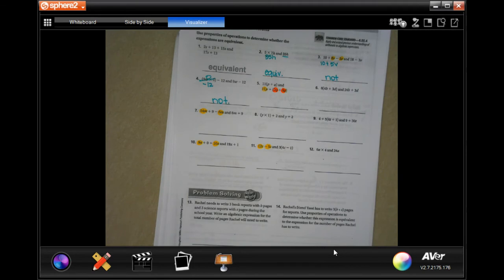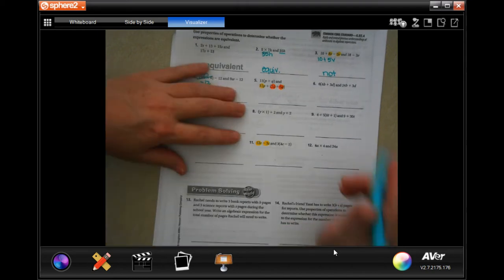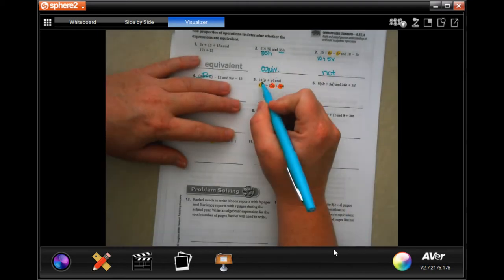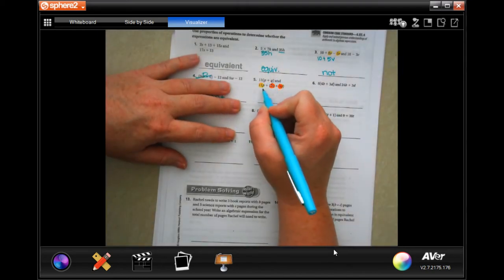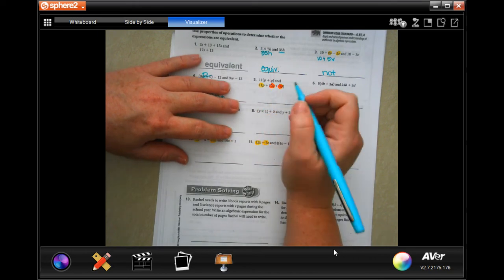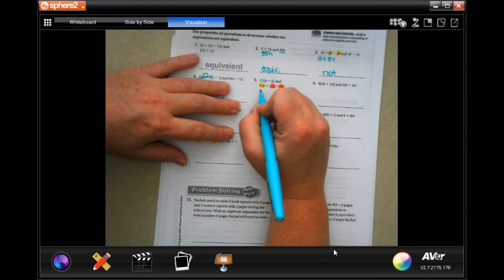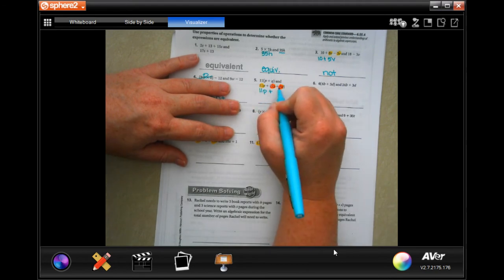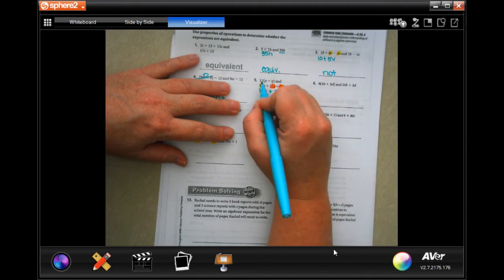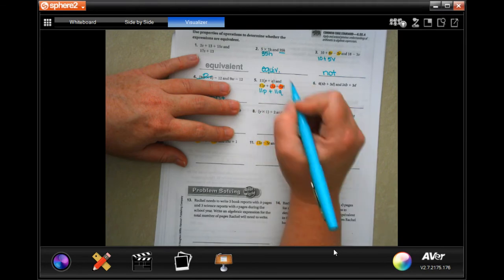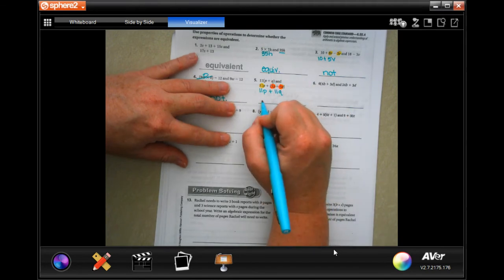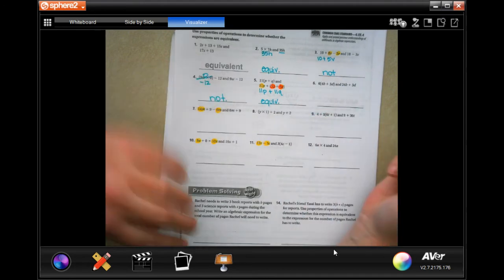So, 11 onto p plus q, would that be the same as 11p plus 7 plus 4q? Well, that means 11p plus 7q plus 4q is 11q. That's the same thing as 11 times p and 11 times q and adding them together. So, equivalent.